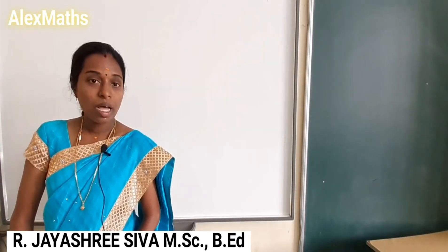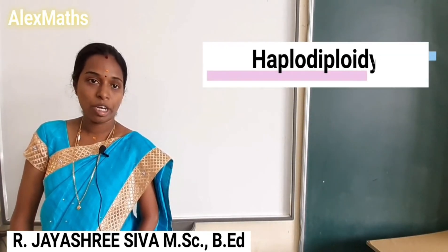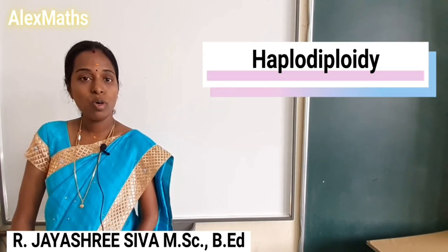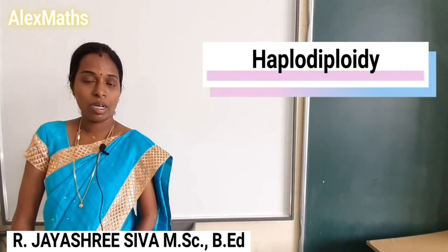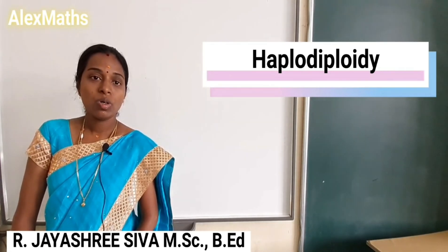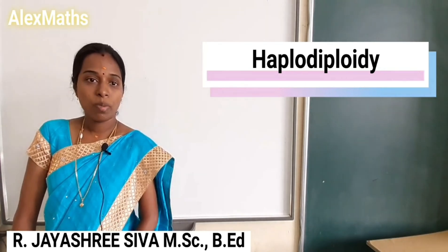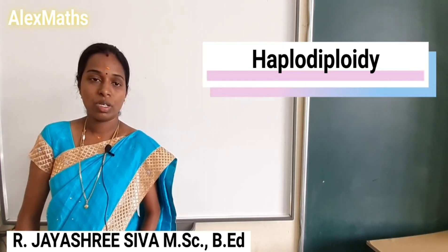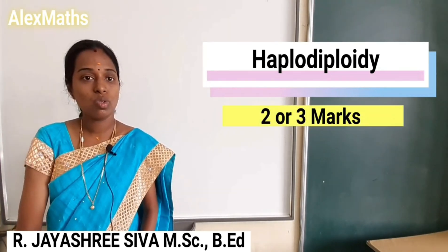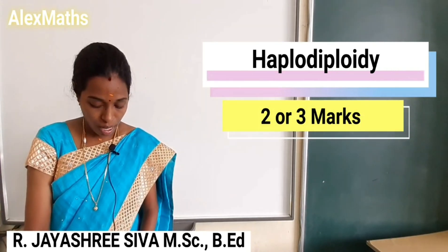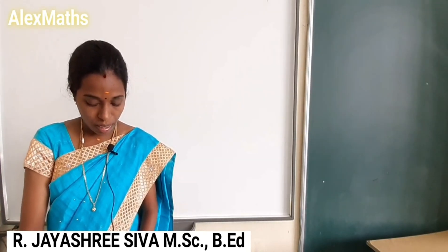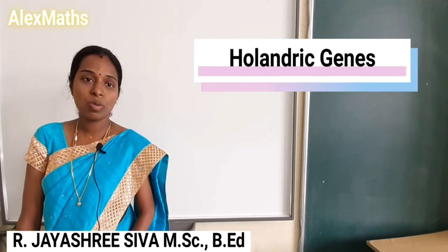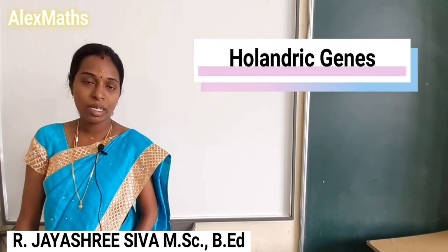Next: what is haplodiploidy? Haplodiploidy involves the haploid condition (1n) and the diploid condition (2n). Haplodiploidy refers to the 2n condition and is worth 2 or 3 marks. Holandric genes — what are holandric genes? What is the other name for holandric genes? This is a 1-mark or 2-mark question.